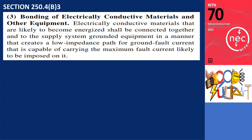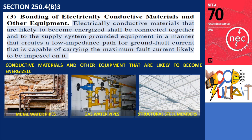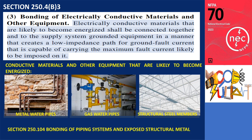Section 250.4(B)(3), Bonding of Electrically Conductive Materials and Other Equipment: Electrically conductive materials that are likely to become energized shall be connected together and to the supply system grounded equipment in a manner that creates a low impedance path for ground fault current that is capable of carrying the maximum fault current likely to be imposed on it. Bonding electrically conductive materials such as metal water piping, metal gas piping, and exposed structural steel members is necessary to ensure safety. The sizing of bonding jumpers should follow the guidelines provided in Table 250.102(C)(1) of the Electrical Code, which specifies appropriate sizes based on the type of material being bonded and the size of the electrical service or system.